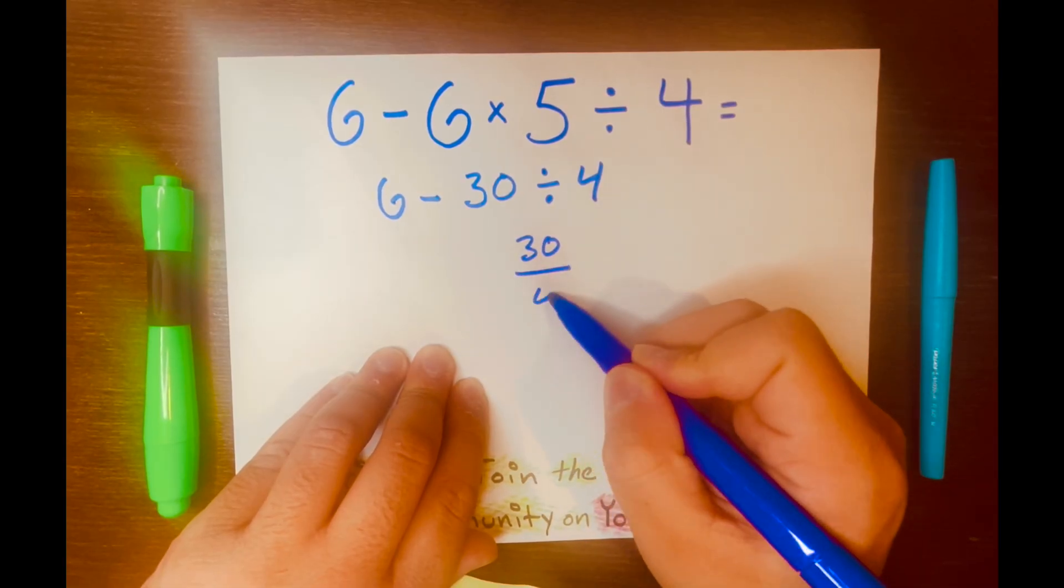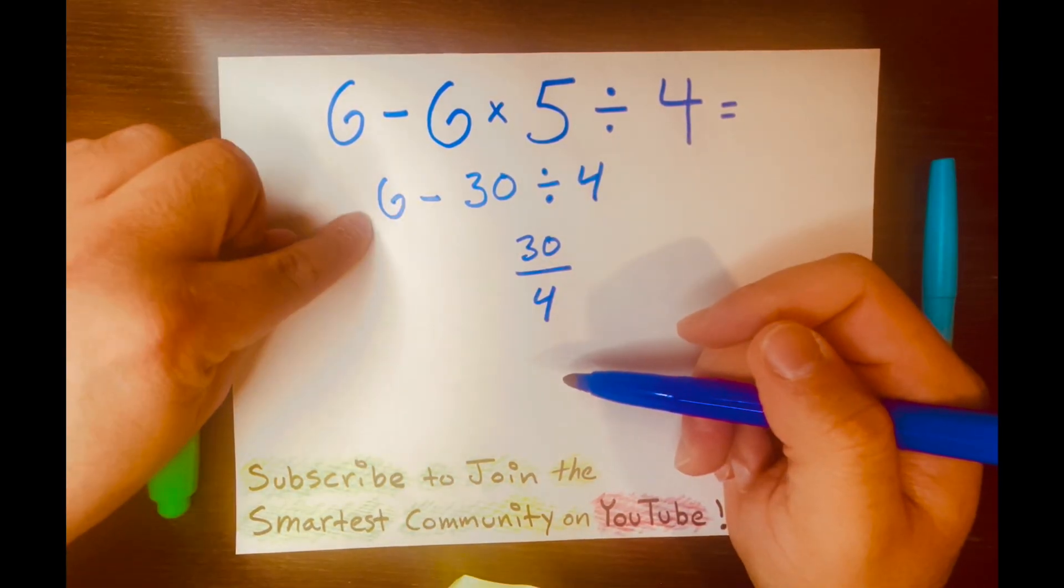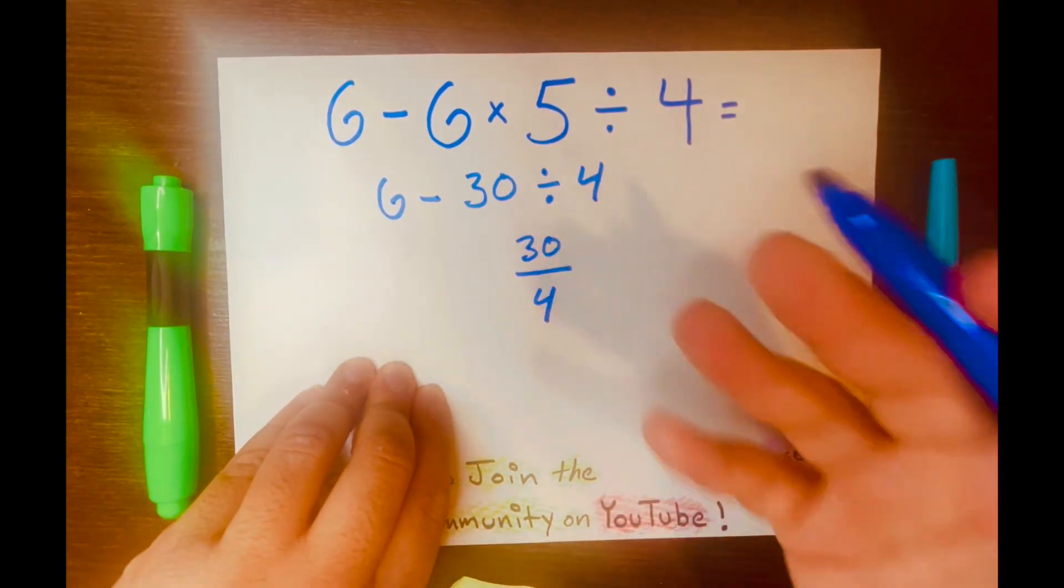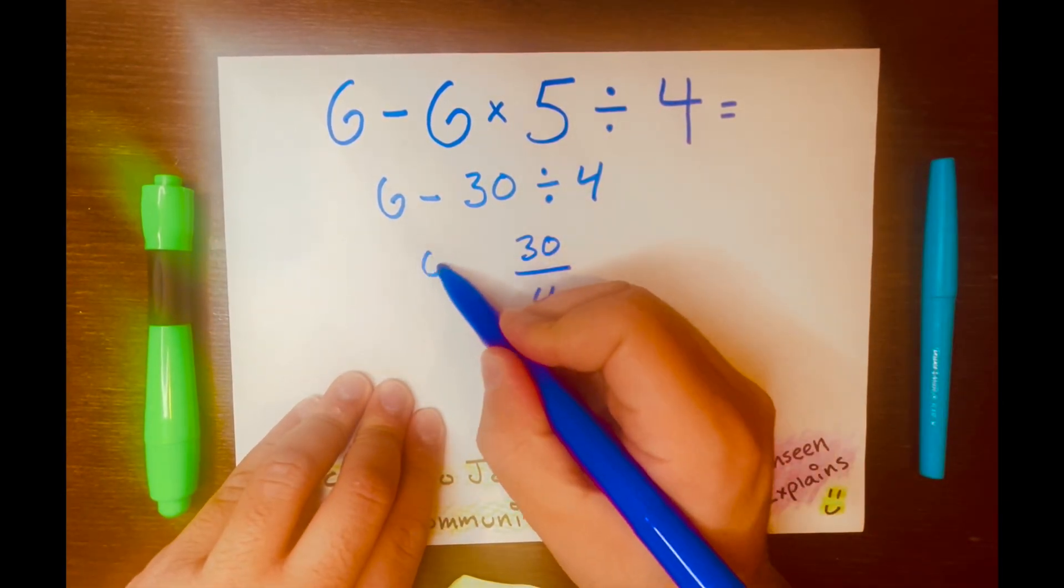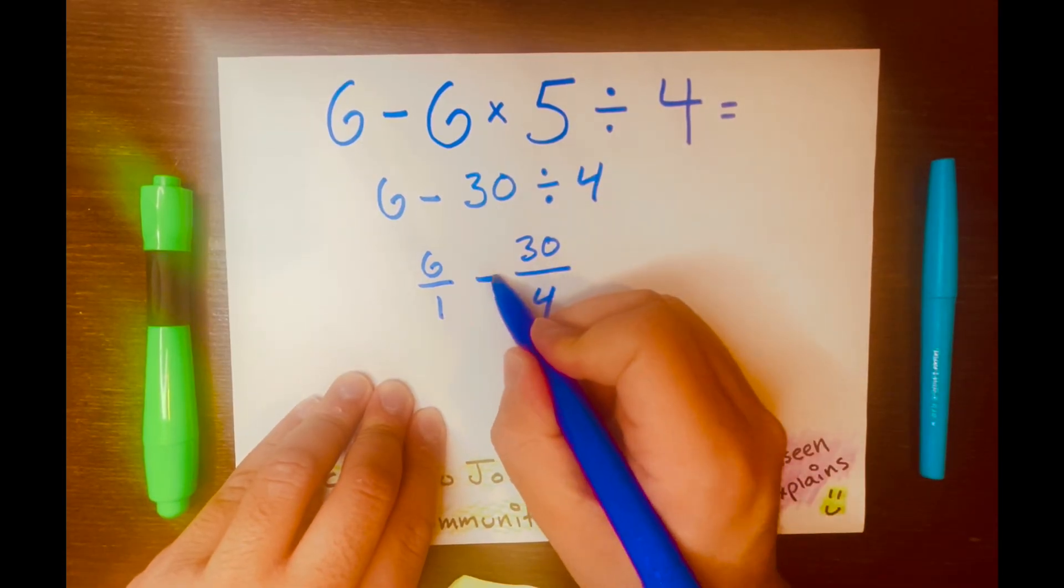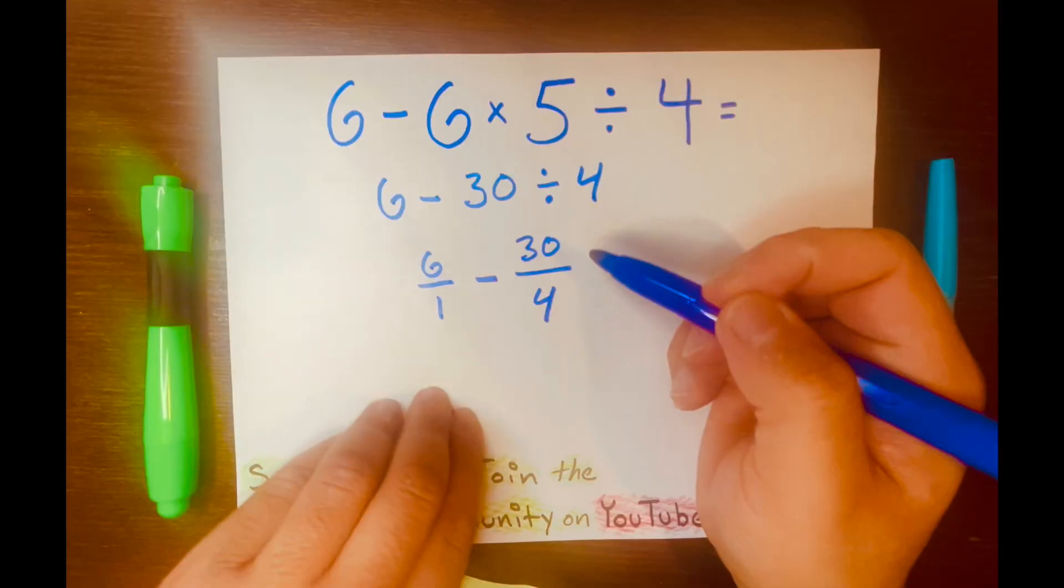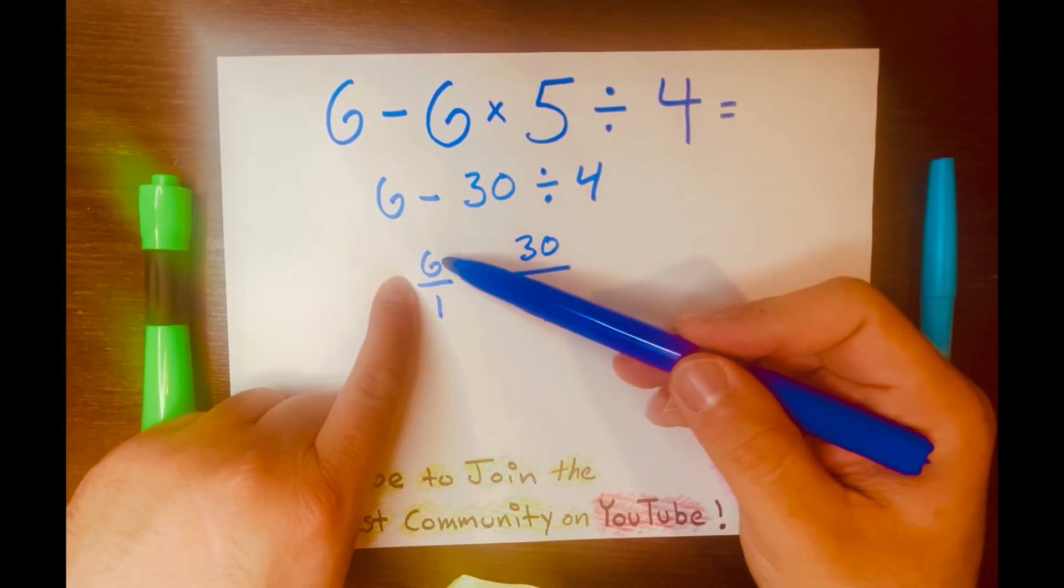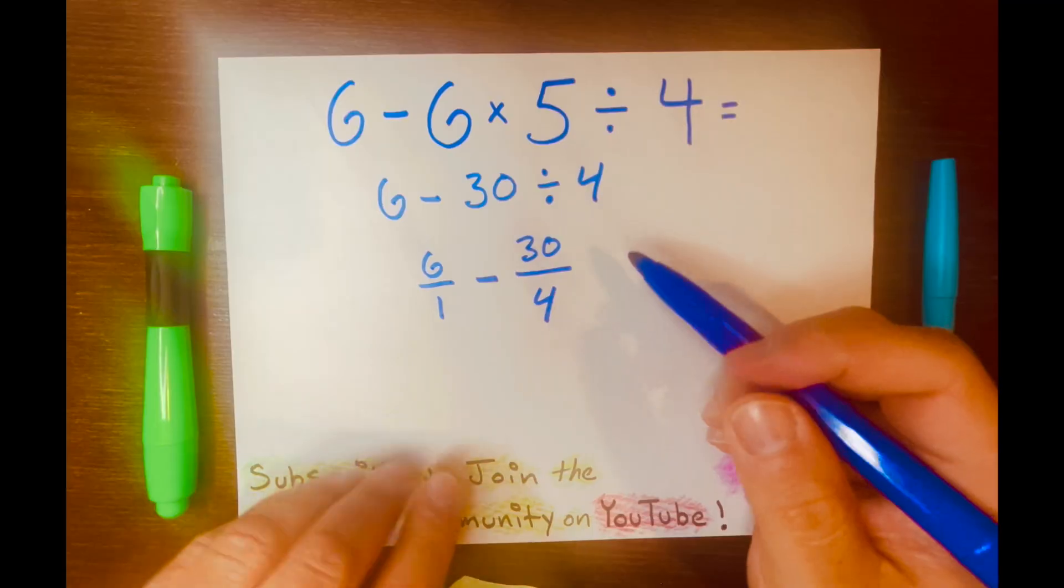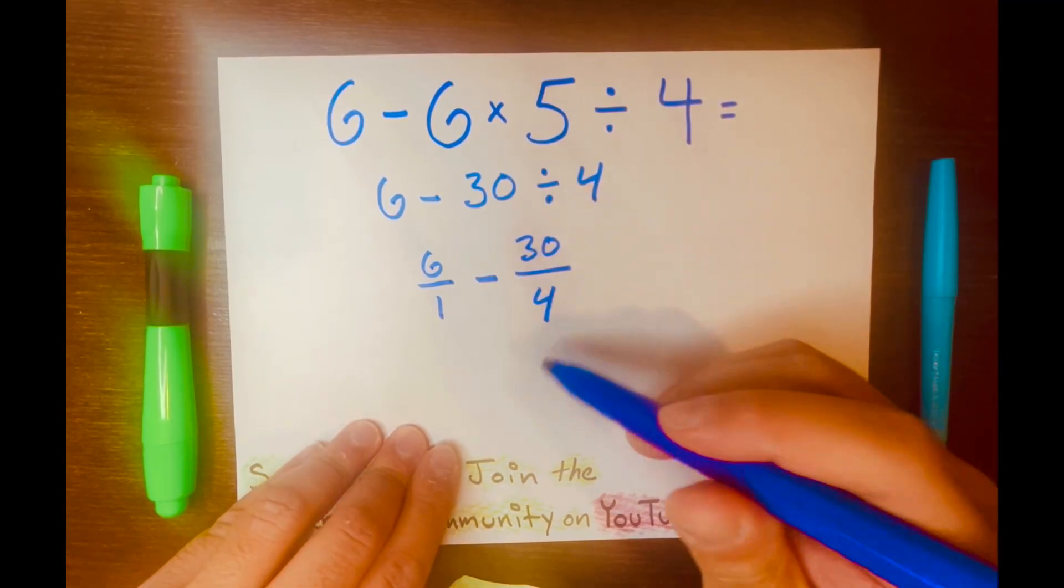let's write 30 divided by 4 in a fraction form, like this, 30 over 4. And let's bring down the 6 in a fraction form as well, like this, minus. And we all know 6 over 1 equals 6. Now, we're looking at 6 over 1 minus 30 over 4. We're going to use the butterfly method.